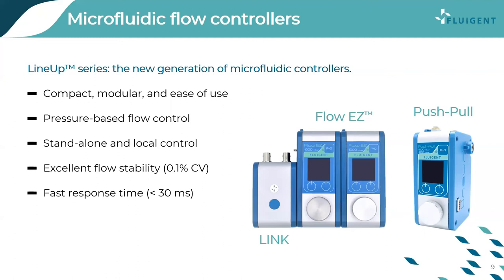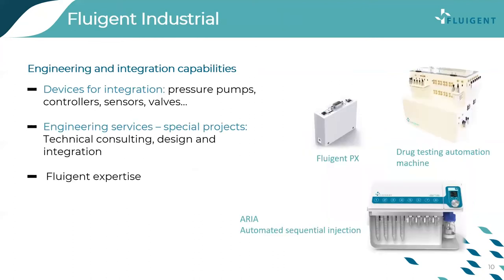Utilizing air pressure to drive liquid flow provides excellent flow stability and response time. We have also extended our LineUp series over time. A good example is the Push-Pull, a versatile device to alternate as needed between pressure and vacuum to a single outlet. Fluigent is well known for laboratory research equipment, but an important part of our business is OEM. We provide compact pressure sources, pressure controllers such as the RPX, and valves that can be integrated into any machine.